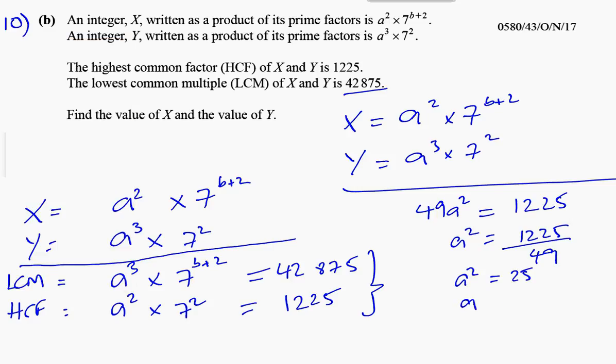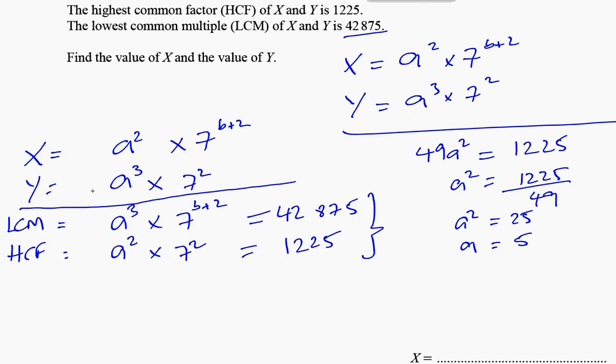With that, we can work out what Y is, but let's just find what b is first. Now we know from the LCM equation, we've got a³ times 7^(b+2) is equal to 42,875.